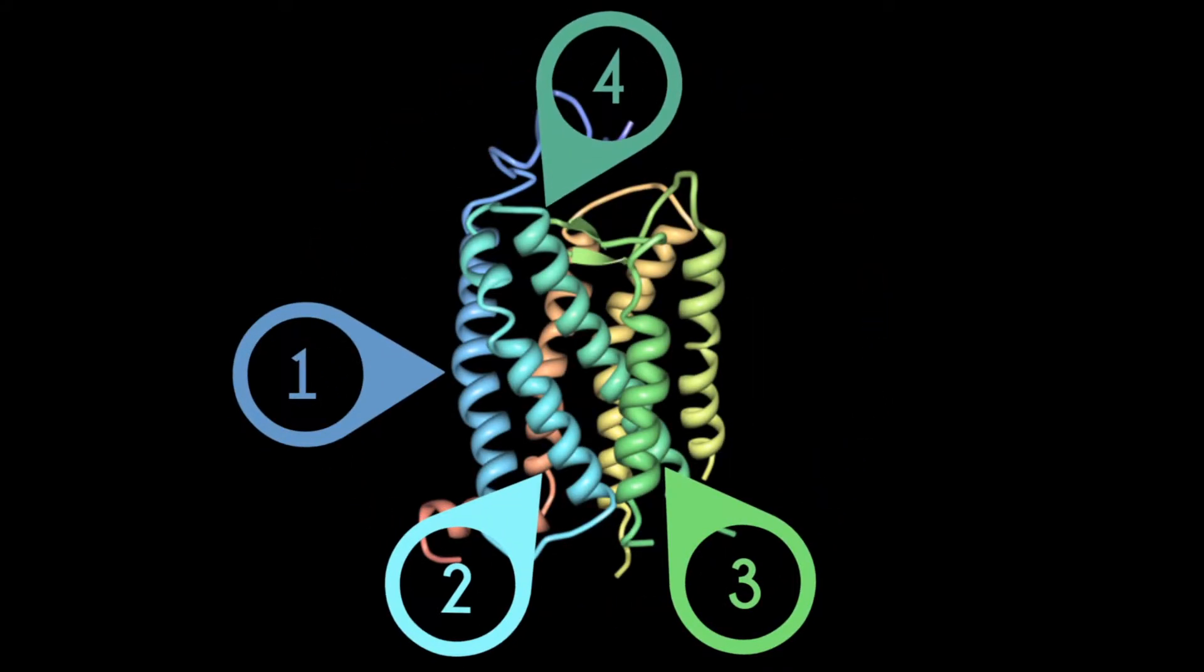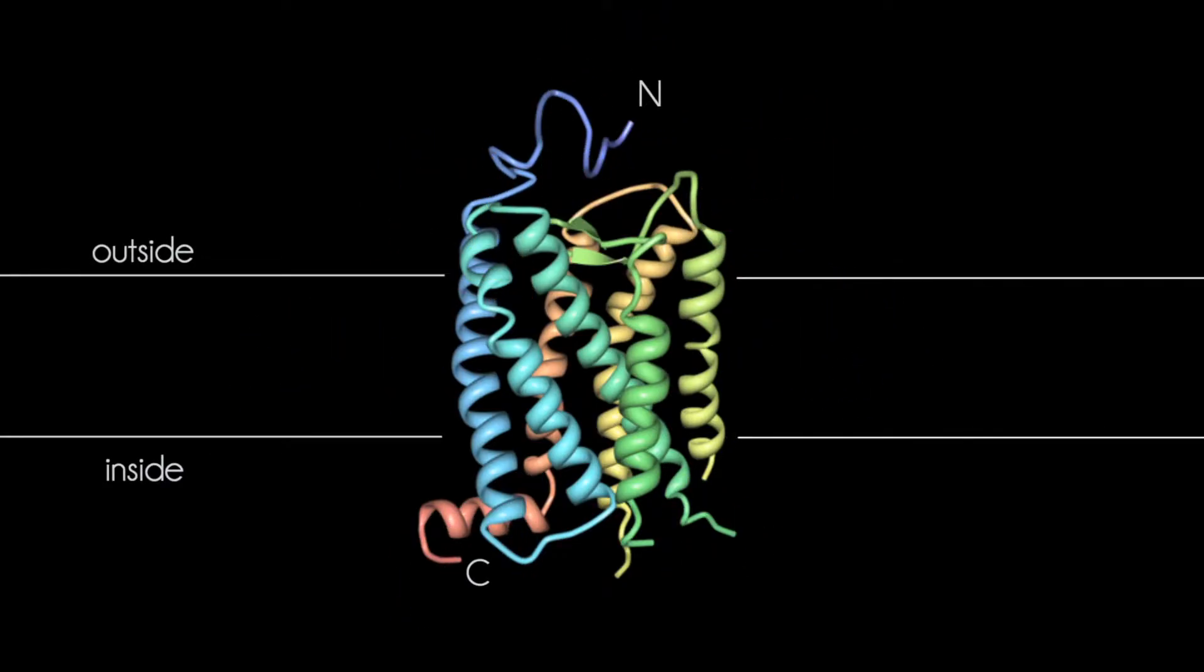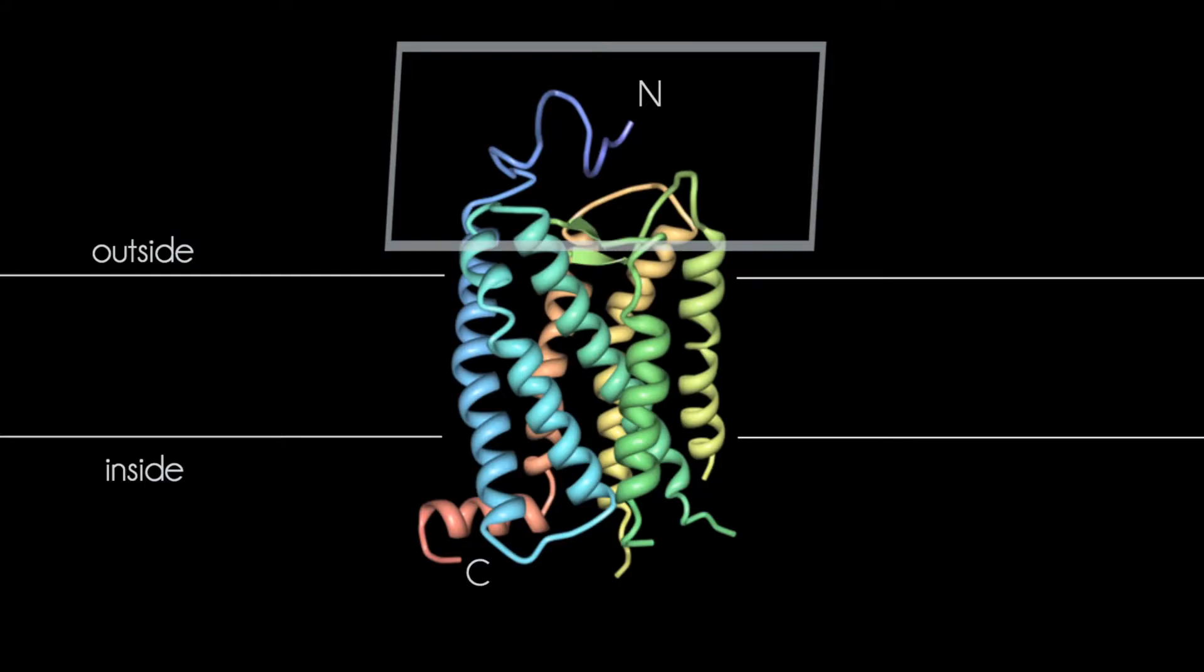The opsin core is made up of seven transmembrane alpha helices. It has three loops that extend into the extracellular matrix, including the N-terminus, and three loops that extend into the cytoplasm, including the C-terminus.